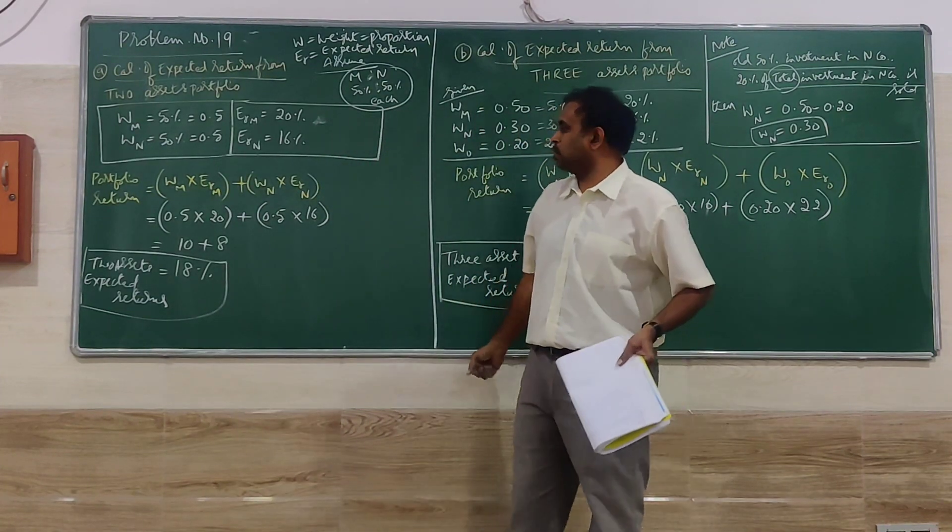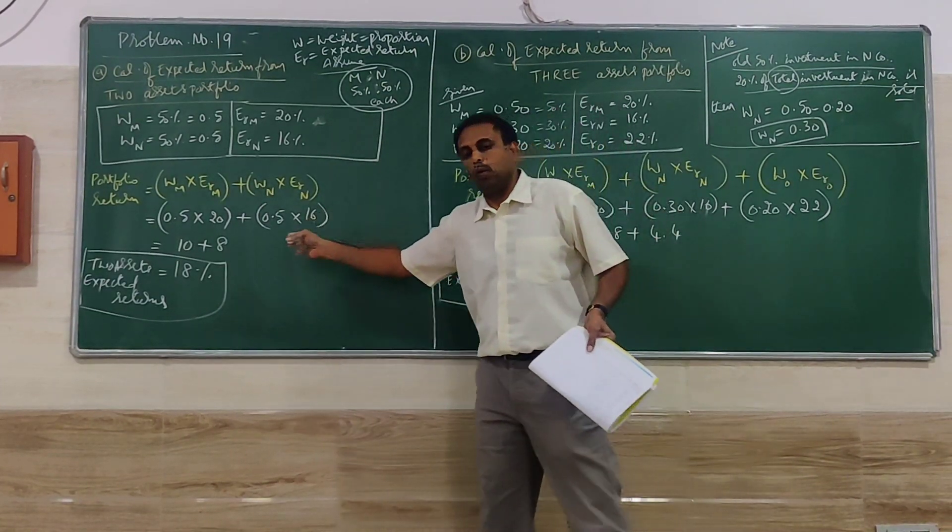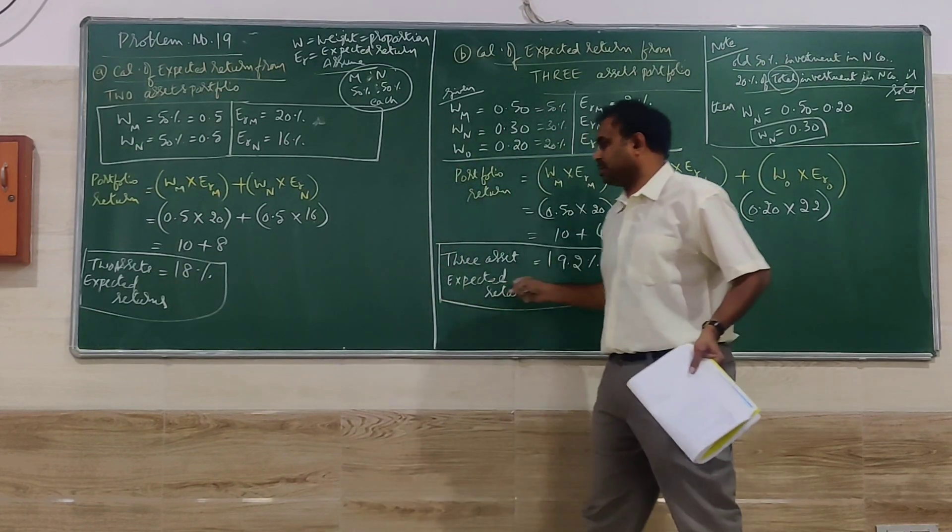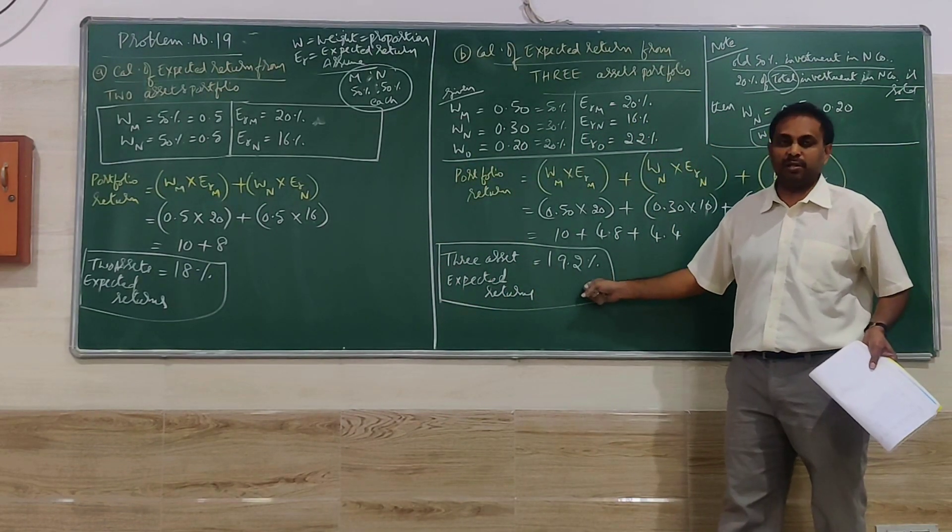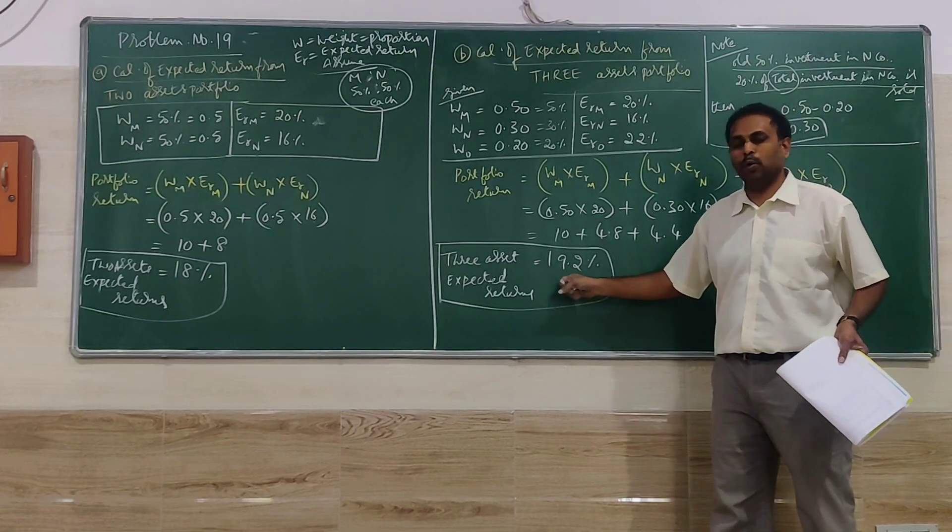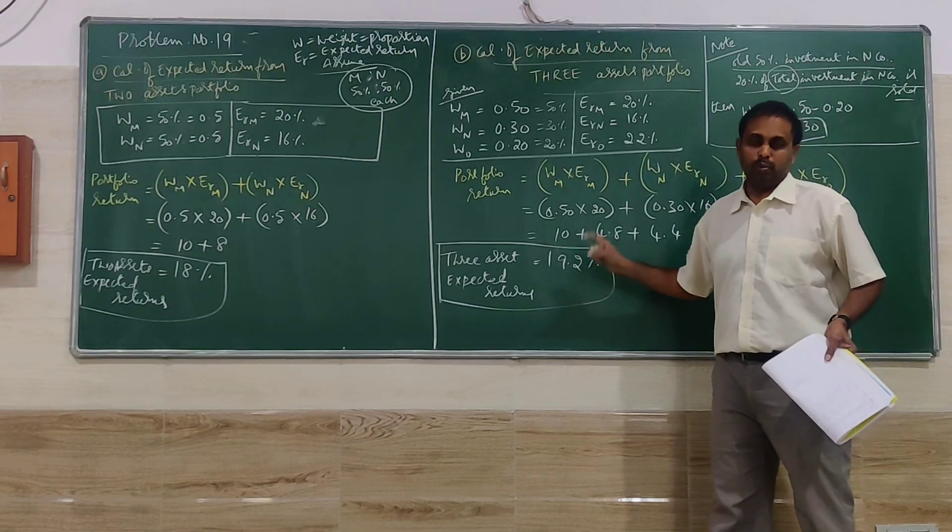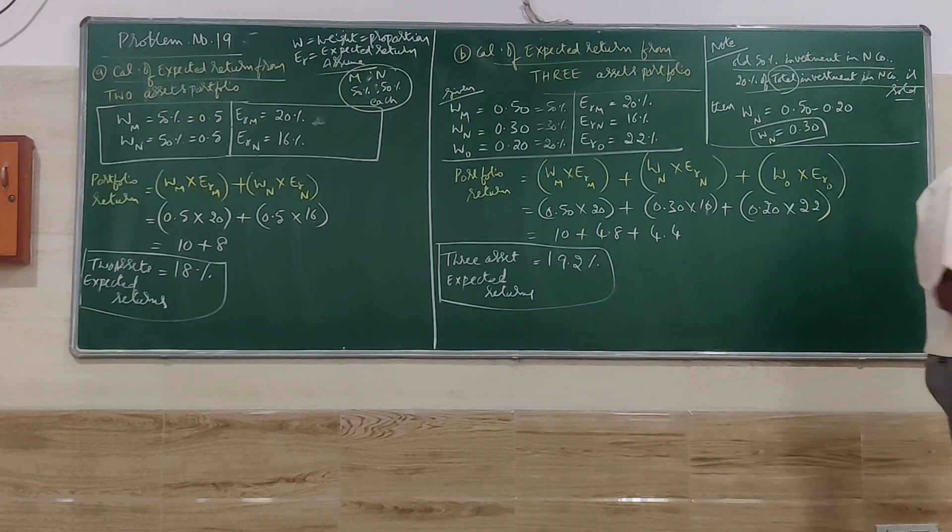So what should the investor do? Should he go for 2-asset return or 3-asset return? He has to choose the highest return, which is the 3-asset portfolio at 19.2%. Thank you.